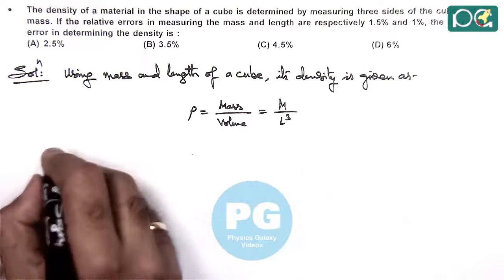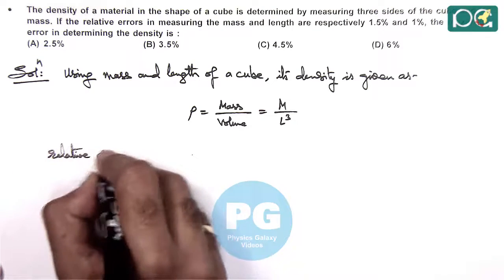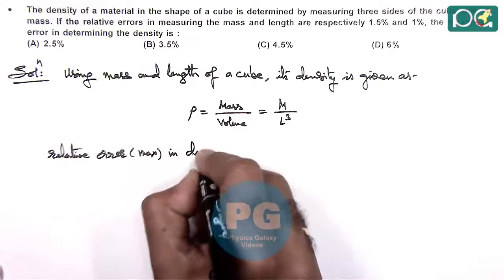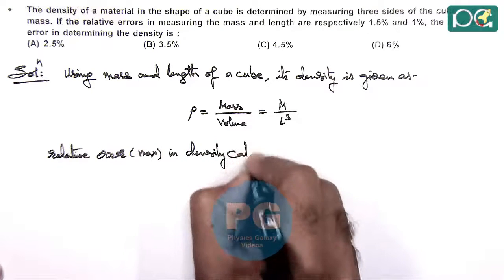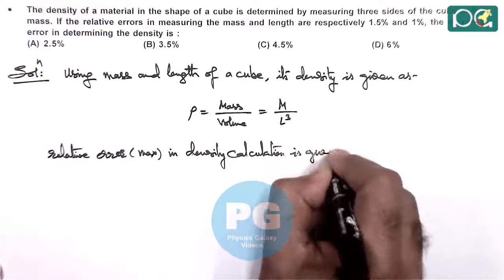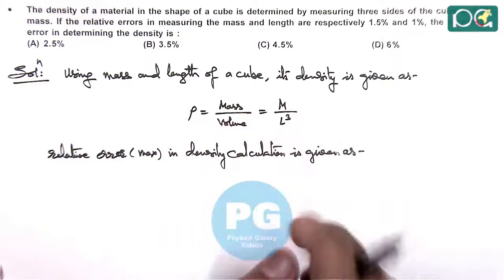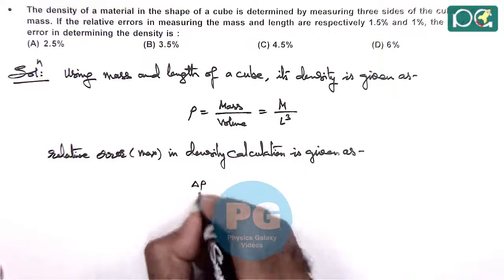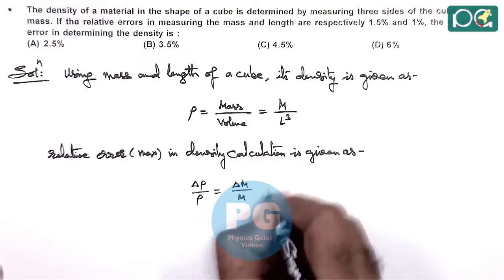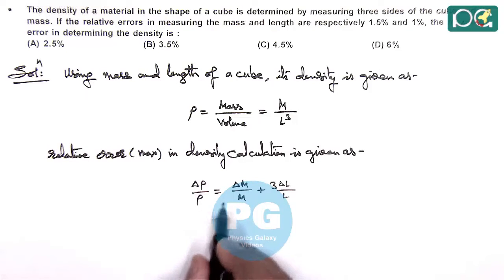So if this is the relation we use, then we can write relative error. If we are talking about maximum error in density calculation, is given as, here the density depends upon the mass and cube of length. So we can write delta rho by rho is equal to delta m by m plus three times delta l by l. That's the way how we calculate the relative density.